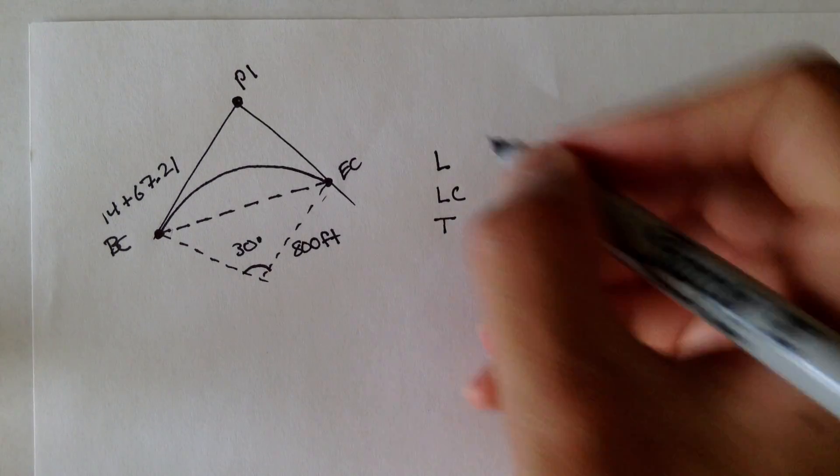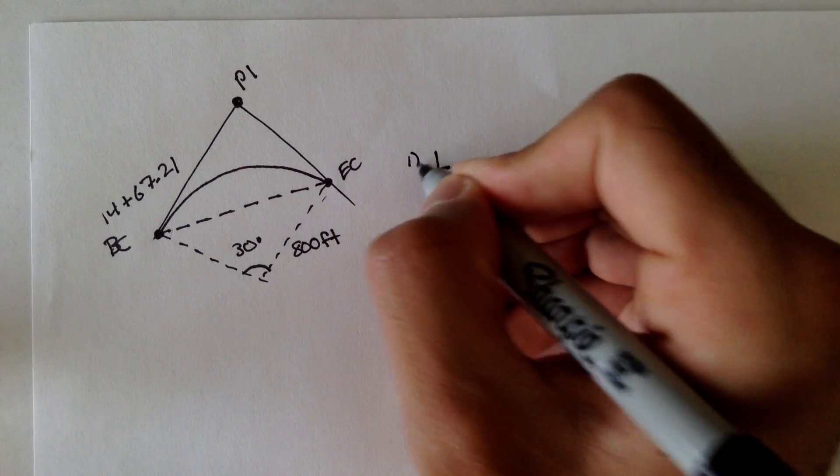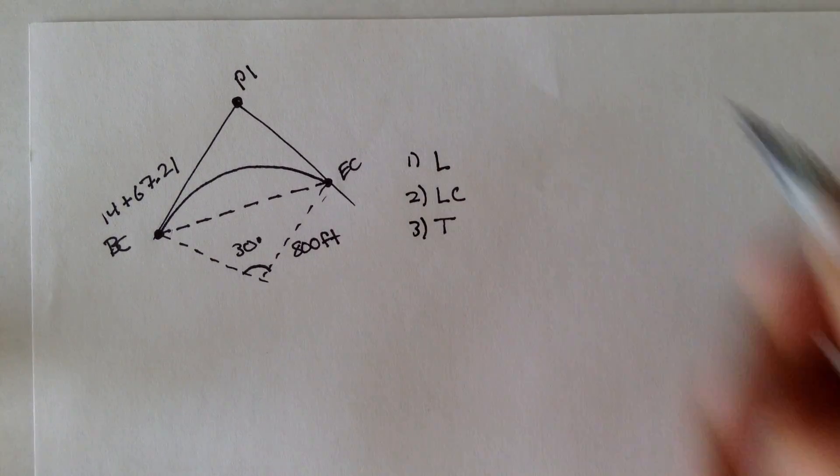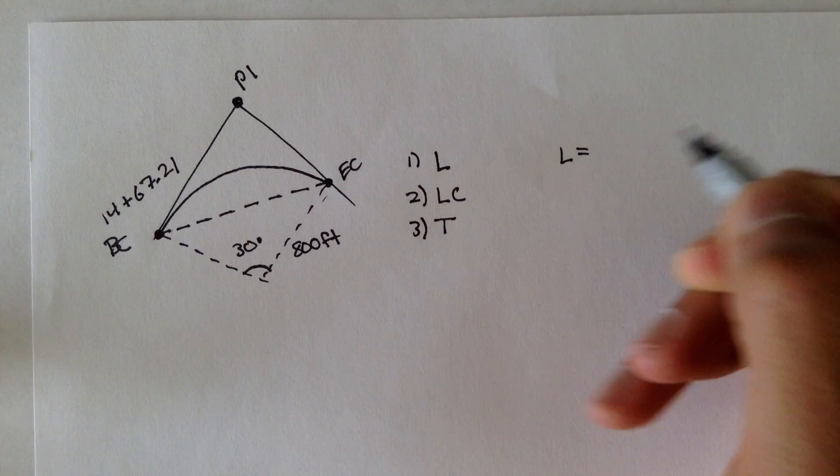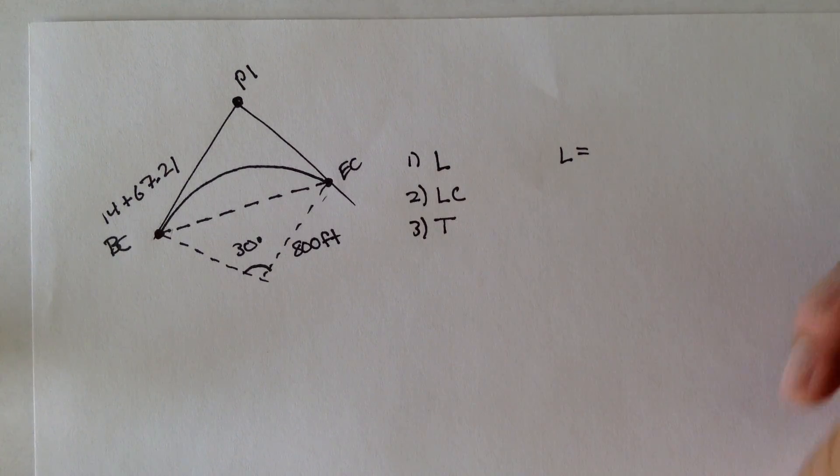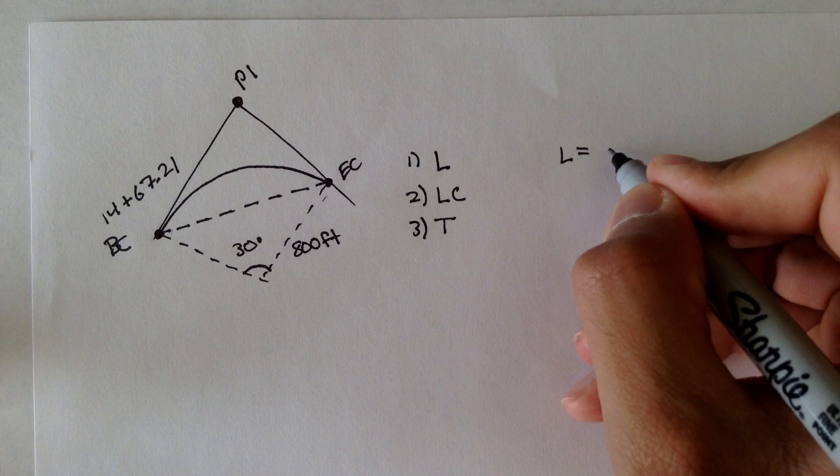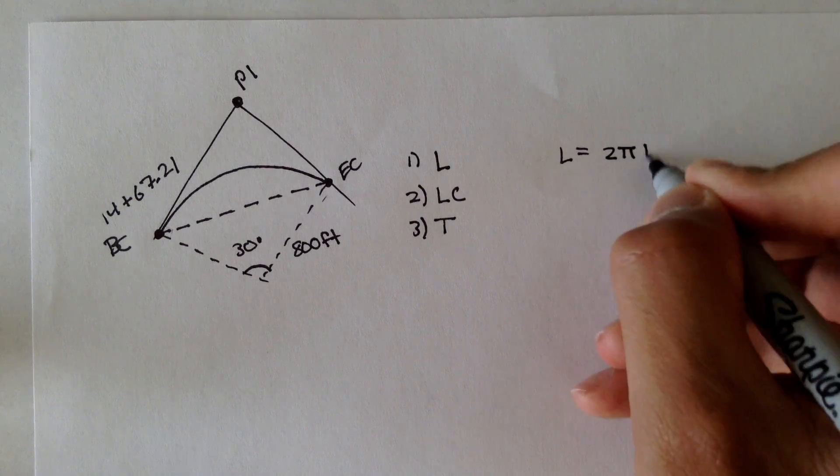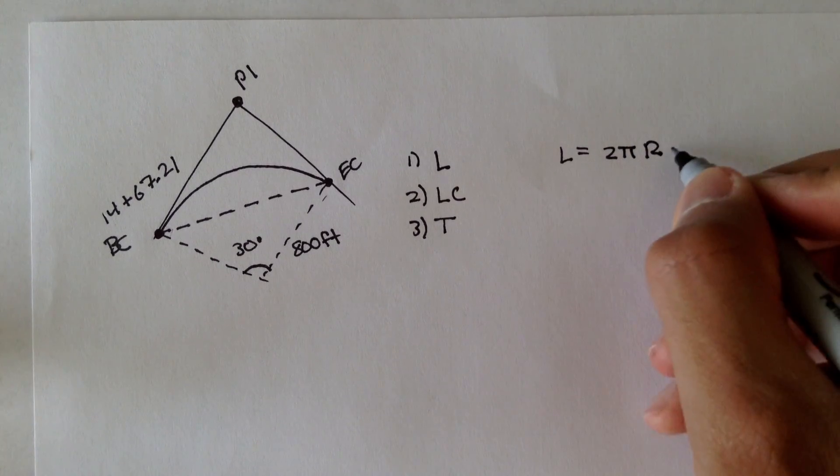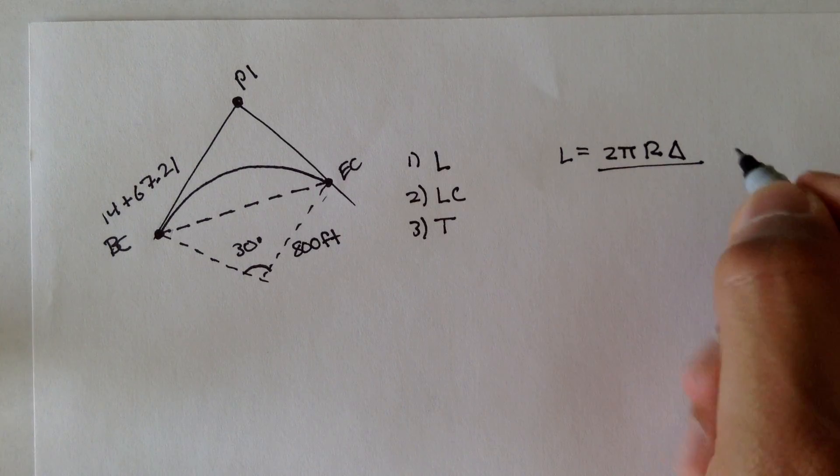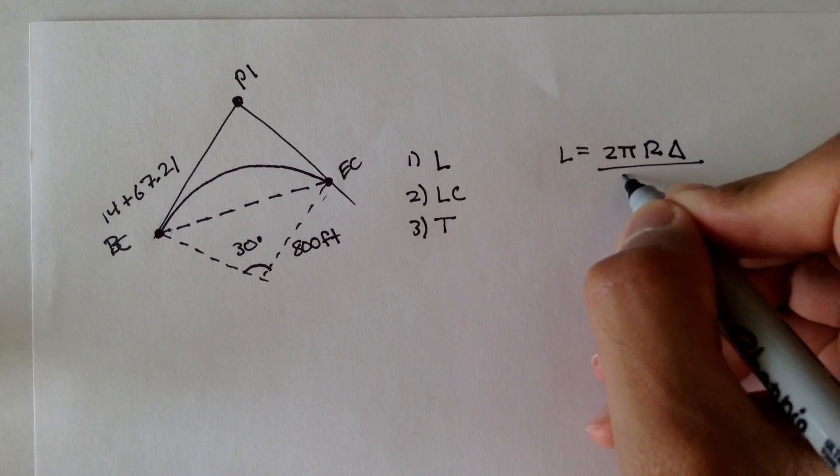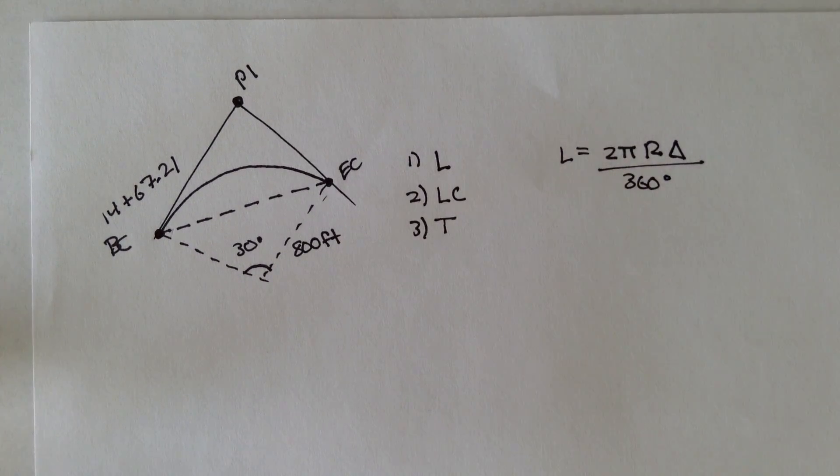So for our length, let's do length first. Let's do number 1, 2, 3. For our length, we know the formula. We know that length of horizontal curves are equal to 2 pi times R. R stands for radius, times delta. Delta is the interior angle. And all of that is divided by 360 degrees.